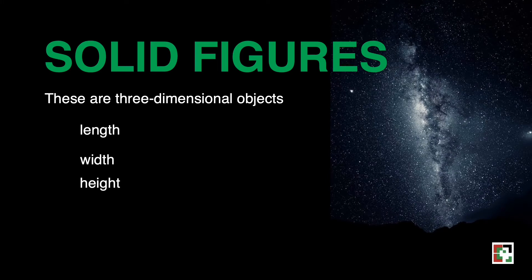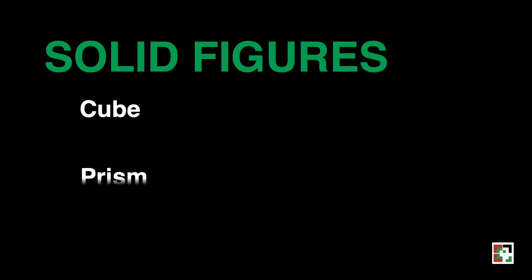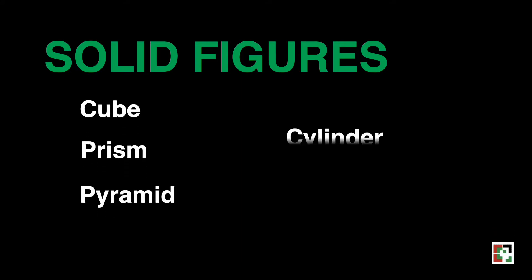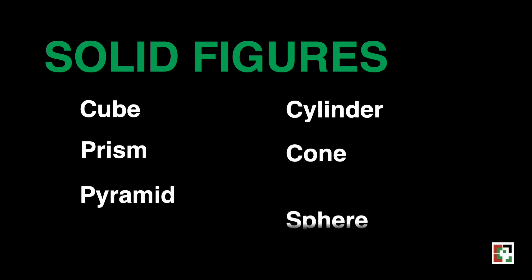Solid figures are identified according to the features that are unique to each type of solid. I'll be discussing for the entire video the different kinds of solid figures, namely cube, prism, pyramid, cylinder, cone, and sphere.